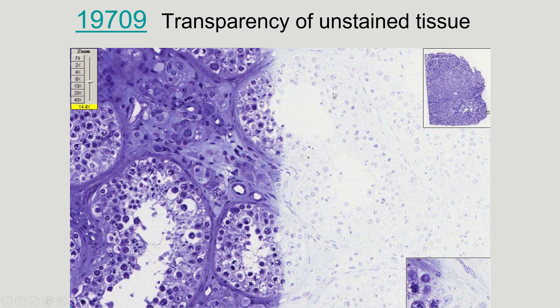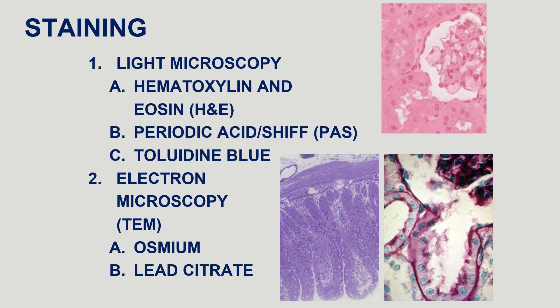Once we fix the tissue and slice it into a very thin piece, we have to stain it. As you can see, this is a tissue that wasn't stained properly — if it's not stained it's transparent and we can't visualize anything. We do have to stain it to see what's going on. We're going to go over the different stains of light microscopy in this video, starting with the most common one: the H&E stain.